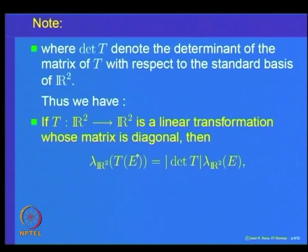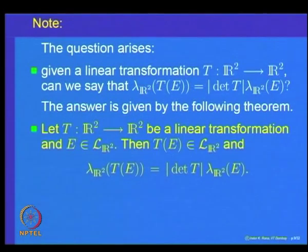The question arises: can we say this result is true for all linear transformations, not just diagonal ones? We have the result for diagonal transformations: if T is diagonal from R² to R², and we transform a Lebesgue measurable set according to T, the Lebesgue measure of the transformed set is |det T| times the original measure. We are going to prove that this result holds for all linear transformations in R².